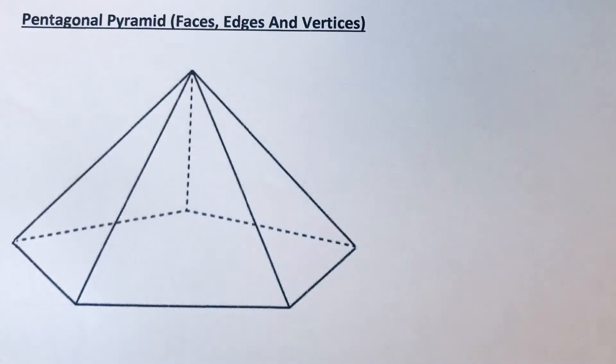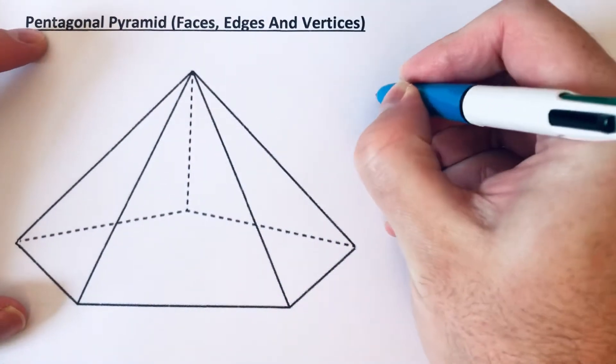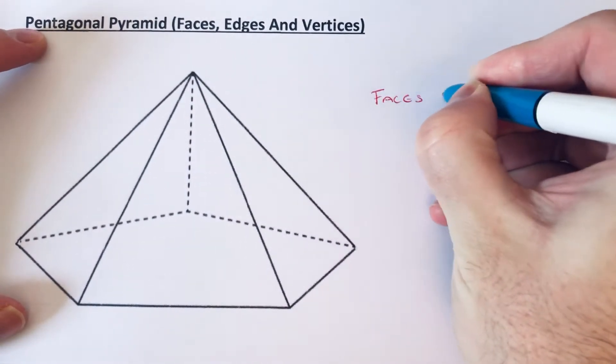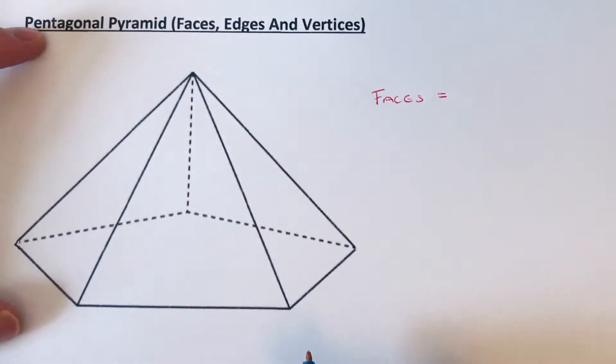Hi guys, welcome back! This is Maths 3000. Today we're going to look at the faces, edges, and vertices of a pentagonal pyramid. So let's start off with the number of faces first of all. The faces are the same as the surfaces which make the pyramid.